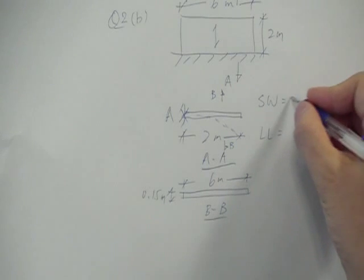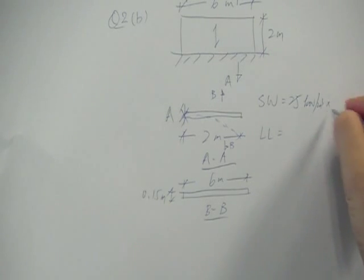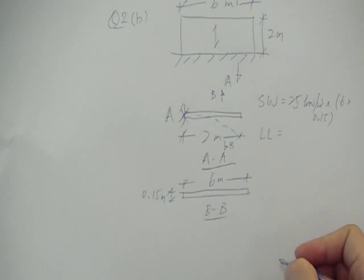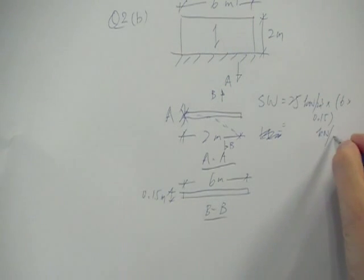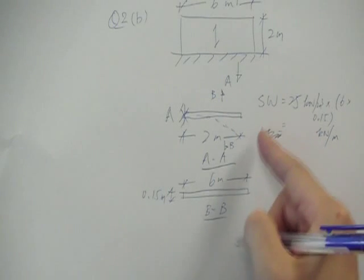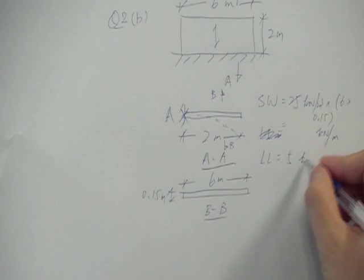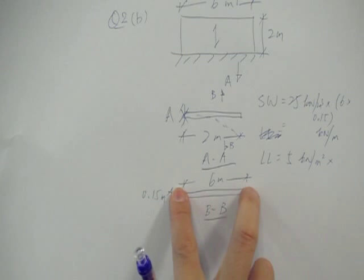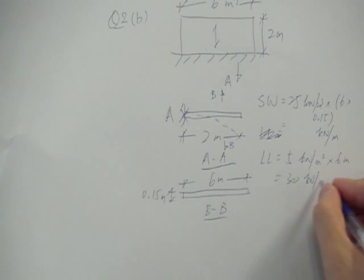So to determine the self weight, you just multiply the density of concrete 25 kilonewton per meter cube times the cross section area which is 6 times 0.15 meters. So that will give you the self weight in the unit of kilonewton per meter. And then you also find out the live load which is given in the question sheet, 5 kilonewton per meter square. And then you multiply by the width of the cross section which in this case is 6 meters. So that will give you 30 kilonewton per meter.